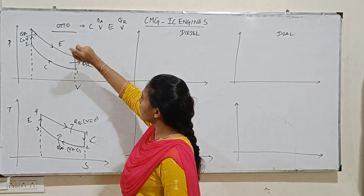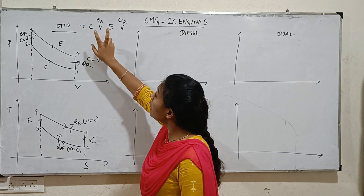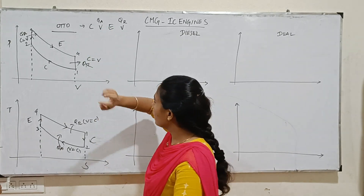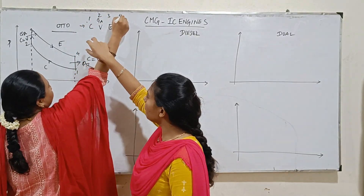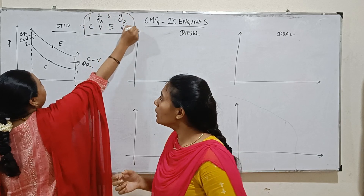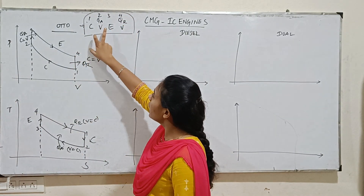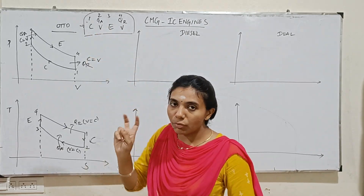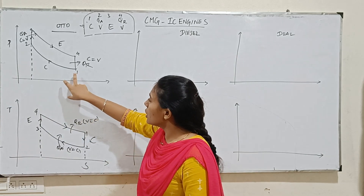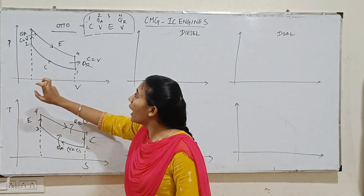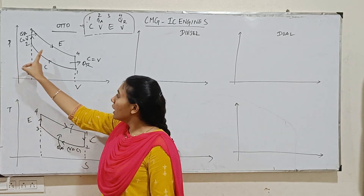So, for the Otto cycle, the PV and TS diagrams show compression and expansion as isentropic. Heat addition and heat rejection are at constant volume. In the PV diagram, 1 to 2 is isentropic compression where pressure increases.